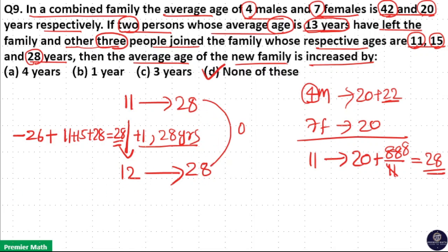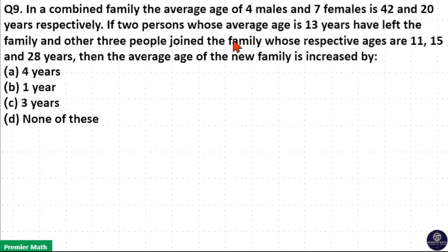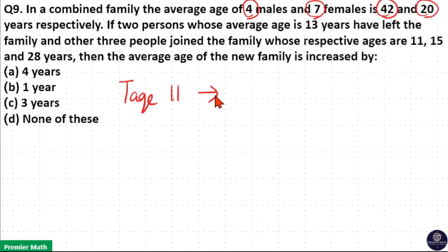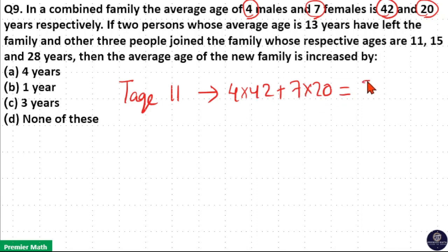This question can also be done in the normal way. Total age of 11 people: initially there are 11 people in the family, so 4 into 42 plus 7 into 20 is the total age of 11 people. Now, 4 into 42 is 168, and 7 into 20 is 140. So the total age of the 11 people is 308.